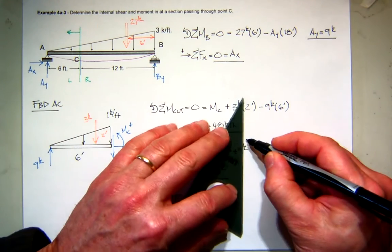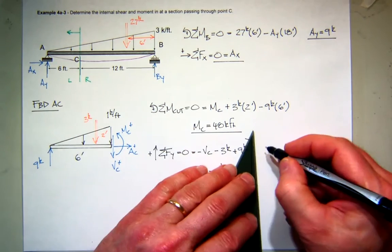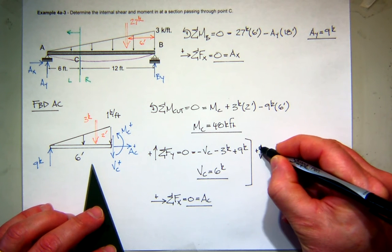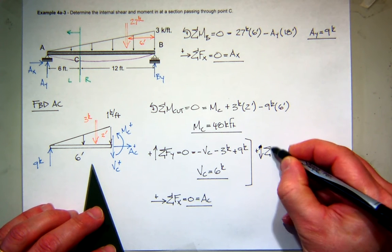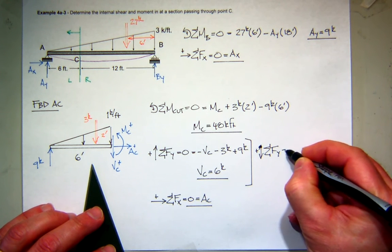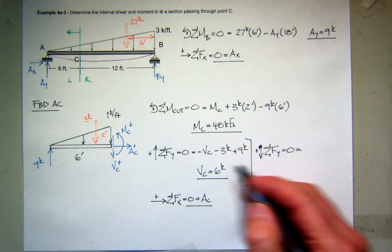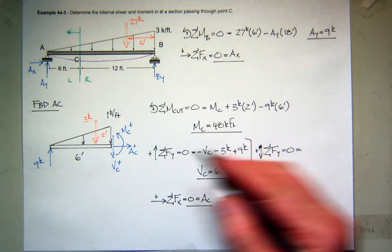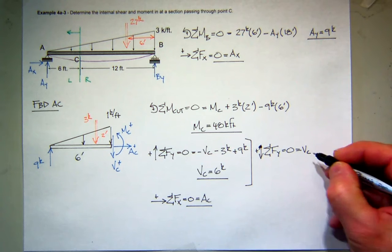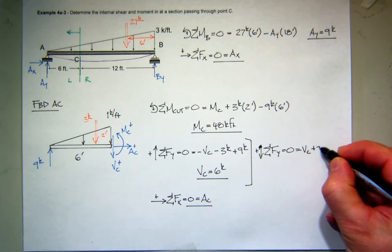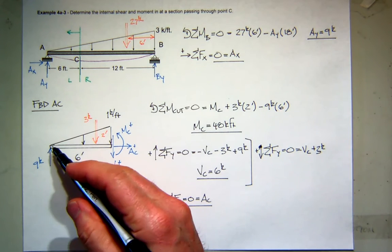Maybe since you asked the question, I'll do this. I'll come over here and I'll sum forces again. And I'll assume down is positive. I can do that, right? I can assume anything I want. So let's go over here. This is down, so that's a positive shear force, I'm a positive force. 3 is down, so that's positive. 9 is up, so that's negative.